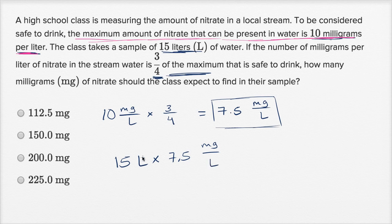Now the units should work out, and they do indeed. You have liter being divided by liter, so those cancel out. And you're left with 15 times 7.5 milligrams. So we just need to figure out what 15 times 7.5 is.